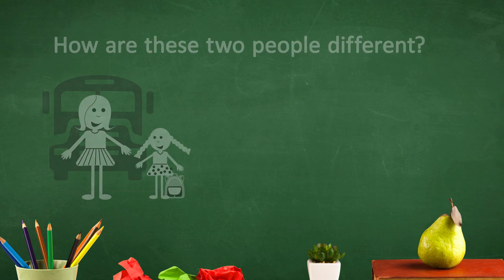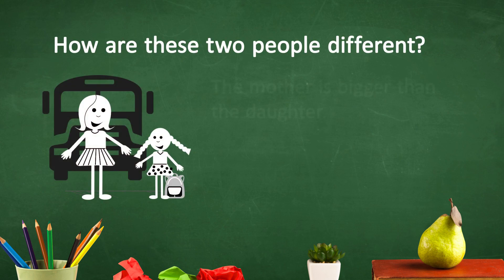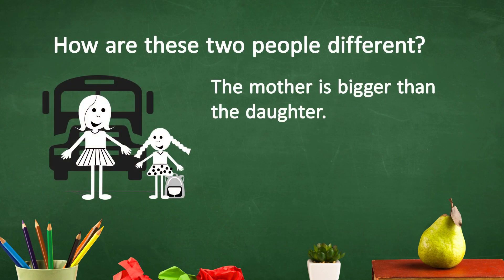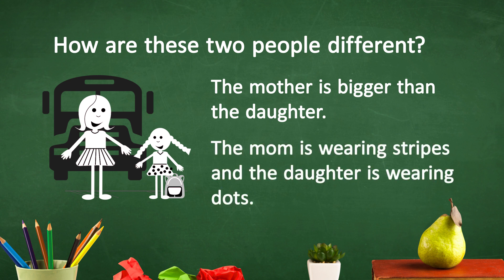For example, a teacher can show an entire class a picture of a mother and a daughter holding hands, waiting for the school bus. The teacher can ask, 'How are these two people different?' One child may answer, 'The mother is bigger than the daughter.' Another child may answer, 'The mom is wearing stripes and the daughter is wearing dots.' Although the teacher should ultimately focus on correct answers that best fit a math context, the teacher should acknowledge that there are multiple correct responses.